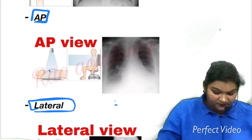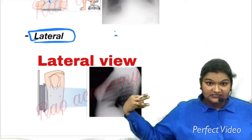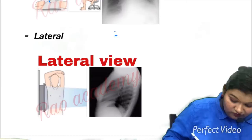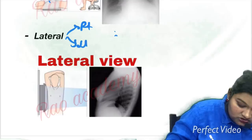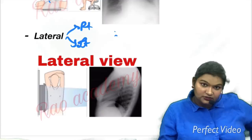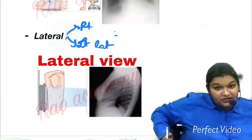In the lateral view, the source of x-rays is from one side and the film is on the other side. This gives you two sides — right and left. To determine which is right and which is left, whichever side the cassette is placed, that is the side of the x-ray. So if the film is on the left, it is the left lateral x-ray; if the film is on the right, it is the right lateral x-ray.